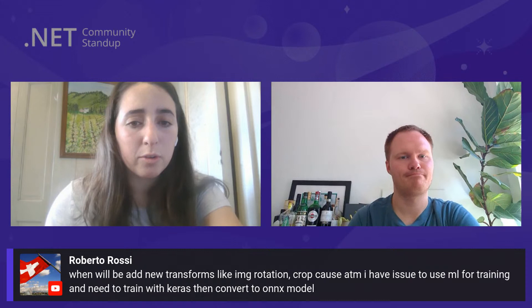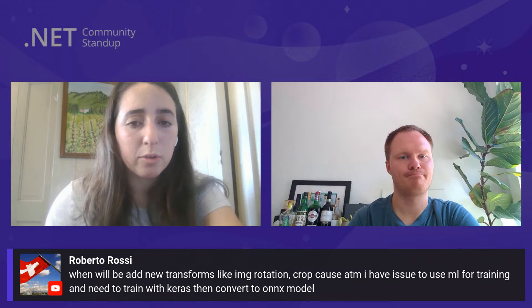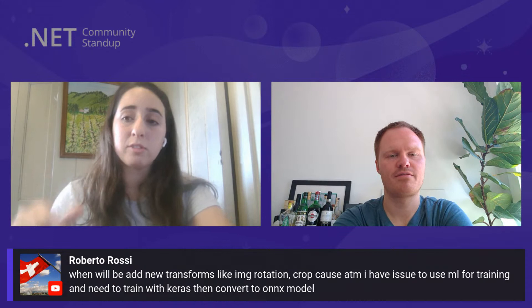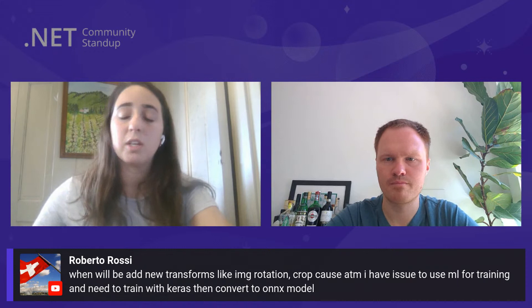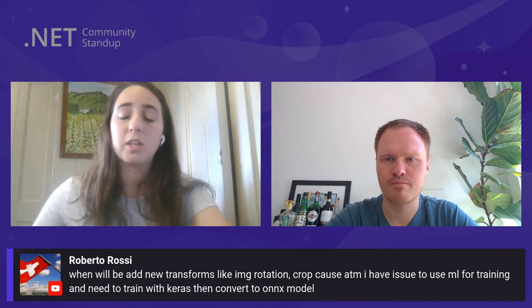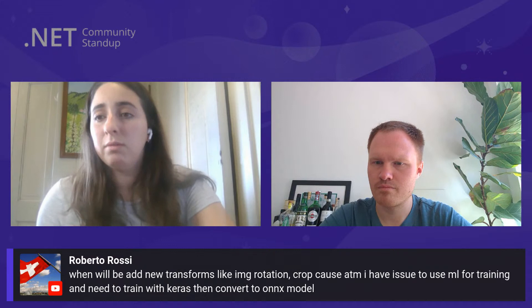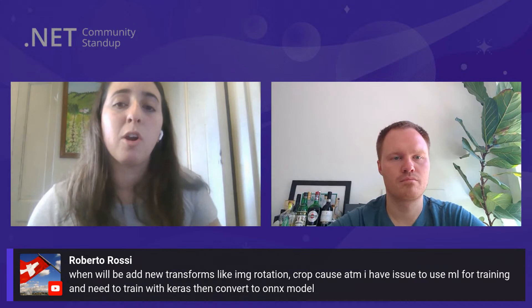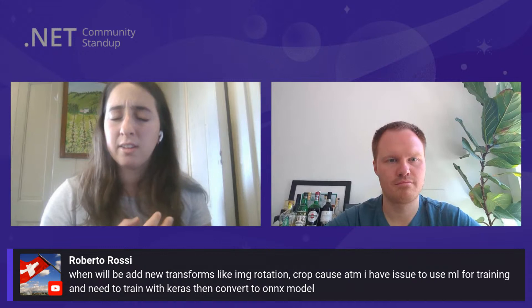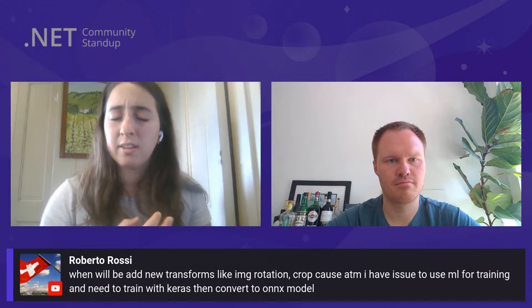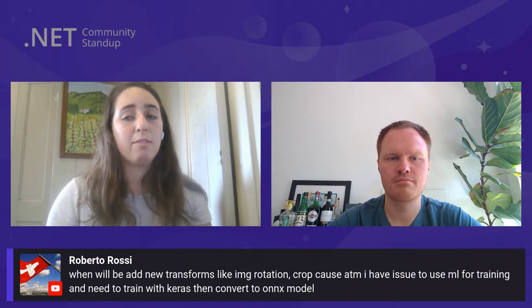Roberto asks: when will we add new image transforms like rotation and crop? At the moment he has issues using ML.NET for training and needs to train with Keras and convert to an ONNX model. I believe that's going to be part of our deep learning story. Let us know which transforms are most important — we'll look at industry standards, but if there's something specific, let us know. Once we implement our deep learning story, we'll have more transforms for images so you won't have to go to Keras and back into ML.NET.